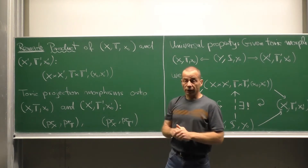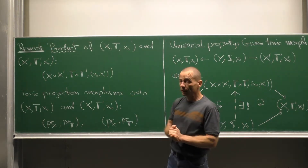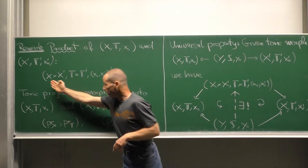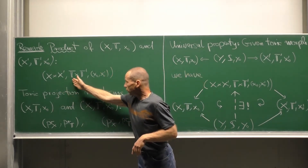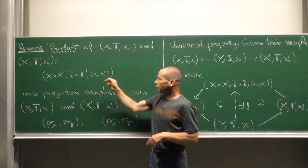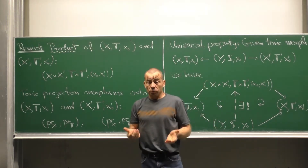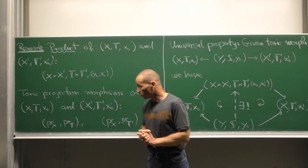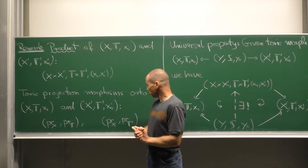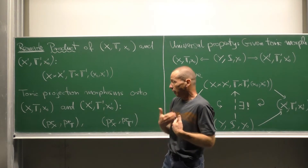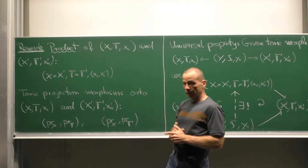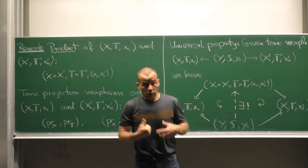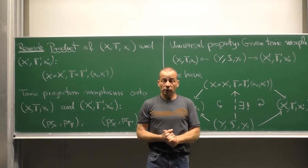Given two toric varieties X, T, X₀ and X', T', X₀', it is quite natural how to construct a toric product variety. We take the product of X and X', the direct product of the tori T and T', and as a base point we take (X₀, X₀'). Then the product of tori T × T' acts factor-wise on X × X', and we have toric projection morphisms onto our factors — projecting onto X and T in the first case, and onto X' and T' in the second.